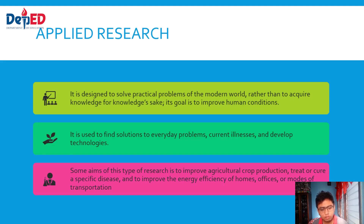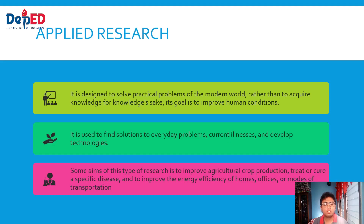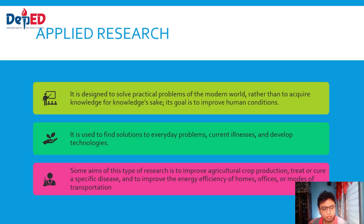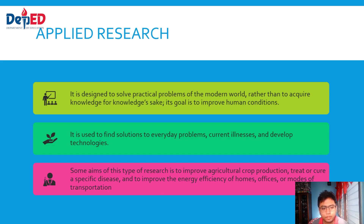Basically, applied research is used when we have a problem right now — like the pandemic. We have a problem in our region, and the result of the research is the vaccine. So basically, that is applied research. You are doing something not because you want to know about it, but rather there is a problem and you will find a solution for that. That is applied research.